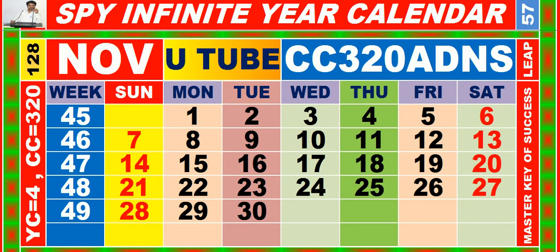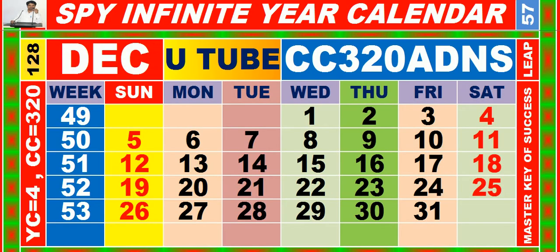Calendar for the month of November, having calendar code equal to 3, 2, 0. Calendar for the month of December, having calendar code equal to 3, 2, 0.